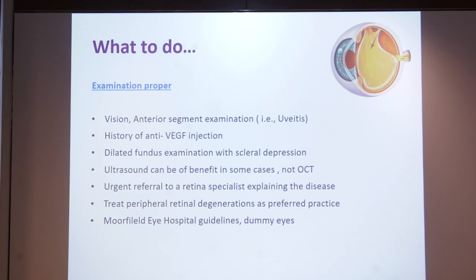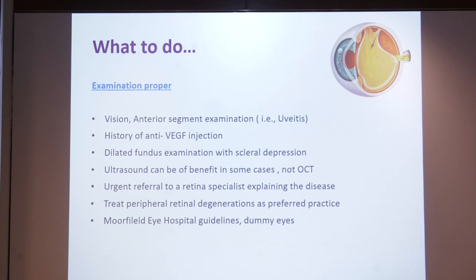What to do? Proper examination includes vision assessment and anterior segment examination to rule out uveitis. History of any anti-VEGF injections or past surgery is important to rule out any inflammation. Dilated fundus examination with scleral depression is important to rule out intermediate uveitis and peripheral exudates. Ultrasound can be of benefit in some cases but not OCT. Urgent referral to a retina specialist with examination and explanation of the disease condition is indicated.